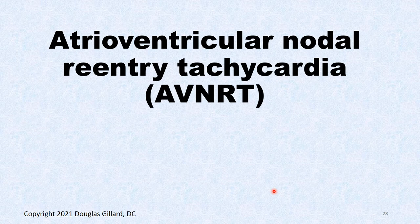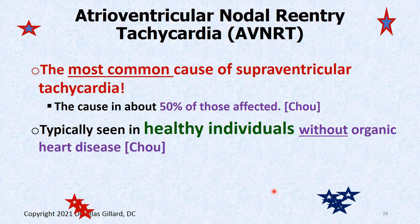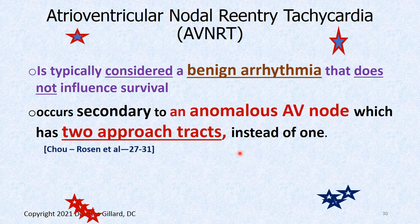Now let's get to AVNRT — the number one cause of supraventricular tachycardia. If you go out drinking on a Friday night, this is probably the tachycardia you'll suffer if you're young. These are seen in healthy hearts without any organic disease. They are considered a benign, pesky arrhythmia, but they can be troublesome if they can't be controlled — the heart could go fast enough to damage itself. It is not as concerning as the other ones we've looked at.